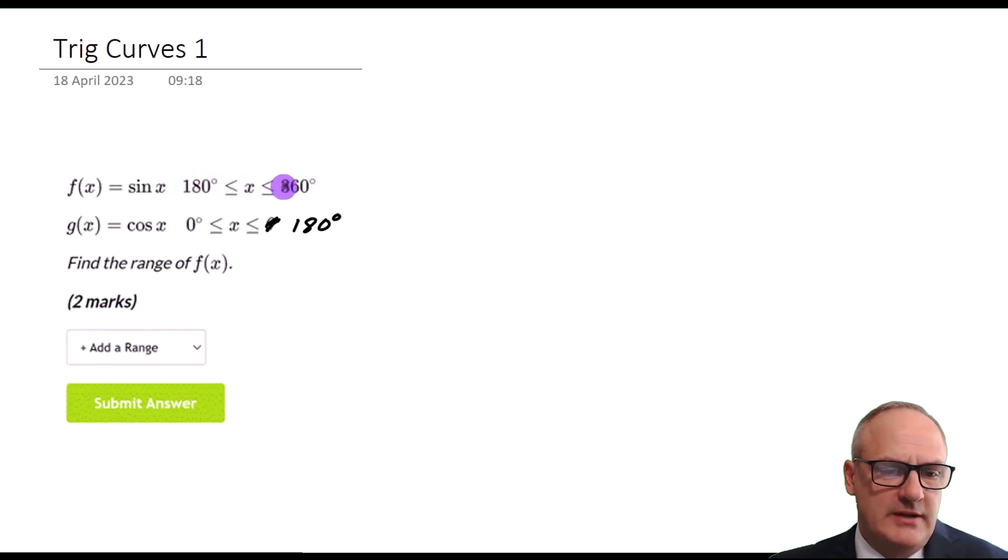That means the domain, the values you put in, are between 180 and 360. And g(x) equals cos x is between 0 and 180. Find the range of f(x).